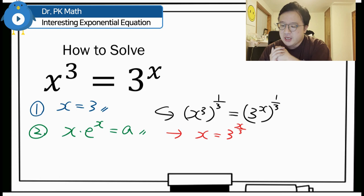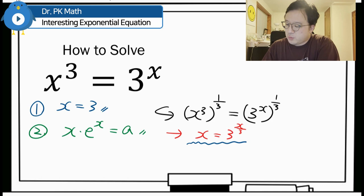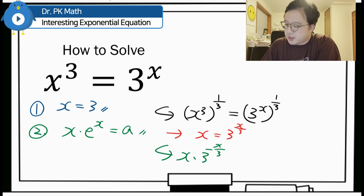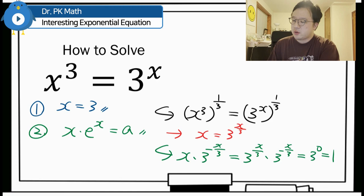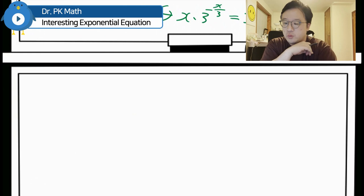Now I'll multiply both sides by 3 to the power of negative x over 3. Then we have x times 3 to the power of negative x over 3, equal to 3 to the power of x over 3 times 3 to the power of negative x over 3. The right-hand side becomes 3 to the power of 0, which equals 1. So we have x times 3 to the power of negative x over 3 is equal to 1.